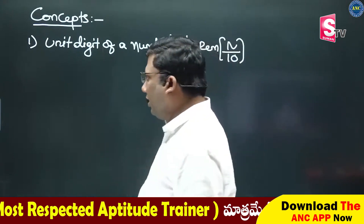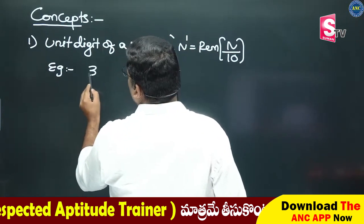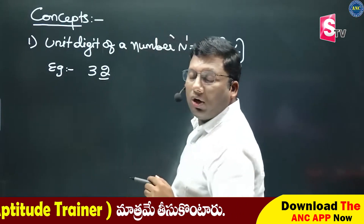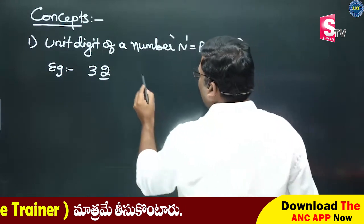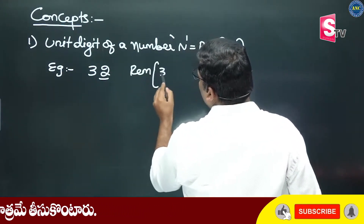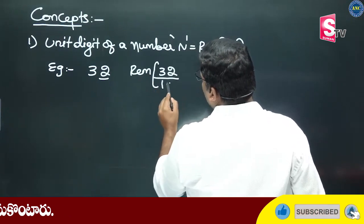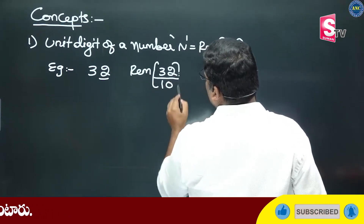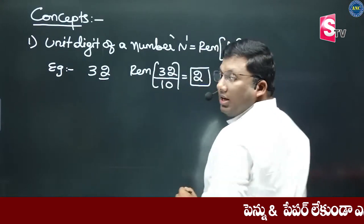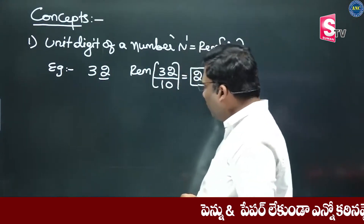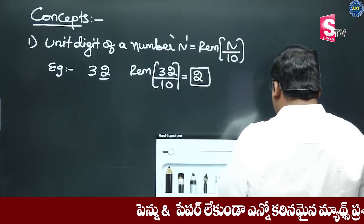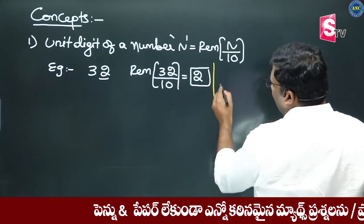I have a problem. For example, 32. In 32, there is a unit digit. I will divide by 10. If I divide 32 by 10, 3 times 10 is 30. The remainder is 2.